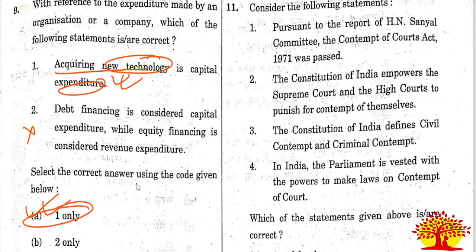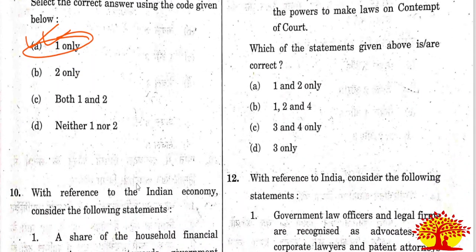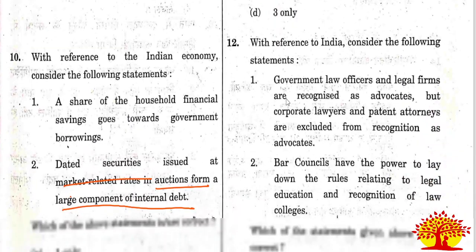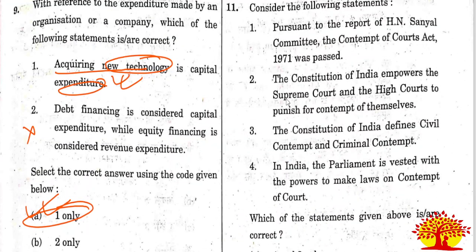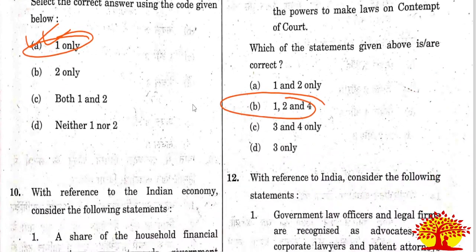Eleventh question: Option B is the right answer. Statement 3 is wrong - it states that the Constitution of India defines civil contempt and criminal contempt. The Constitution of India does not define civil contempt and criminal contempt. Statements 1, 2, and 4 are correct. Option B is the right answer.